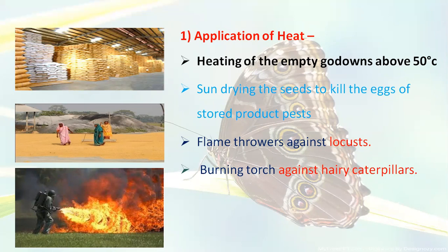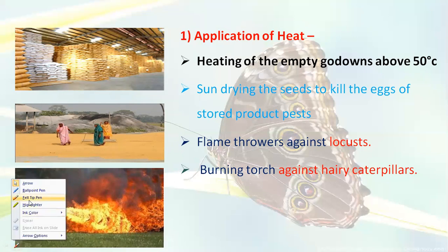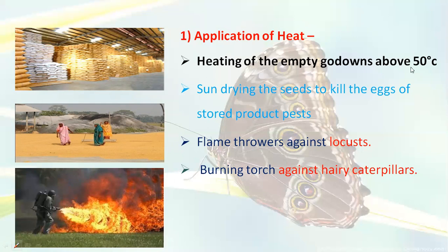During heating, we need a temperature of 50 degrees Celsius to control these pests. A temperature range of around 15 degrees is required to prevent pest attack. The second practice under application of heat is sun drying, where grains are distributed over the soil surface and spread out under sunlight.